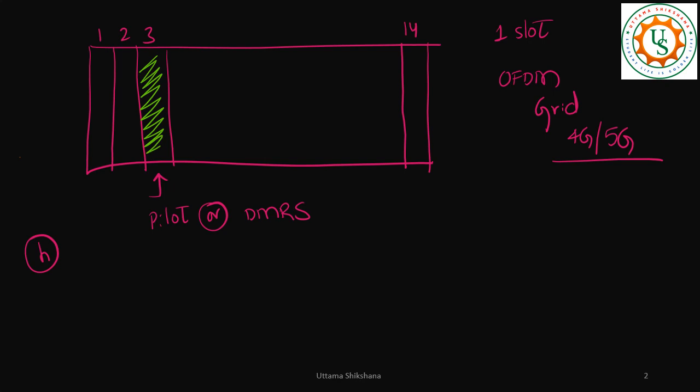Using this h_hat, what will be there in the other places? We will have data here, meaning x. Here also we will have data, like in all the other systems. Across all the symbols we need to use this h and we should get back our data, whatever we have transmitted.